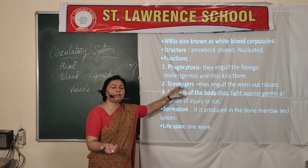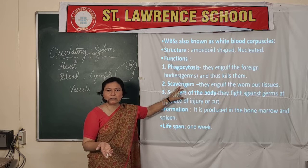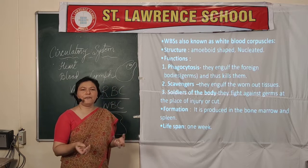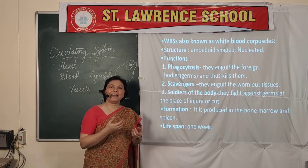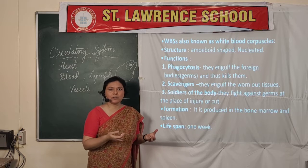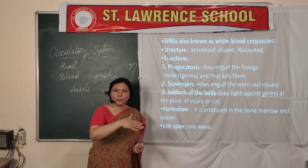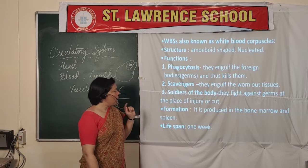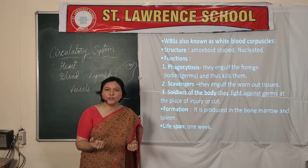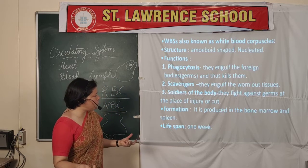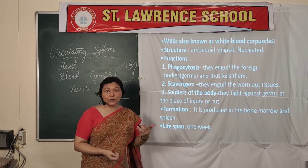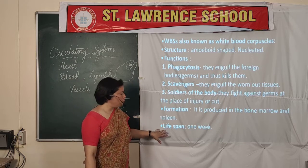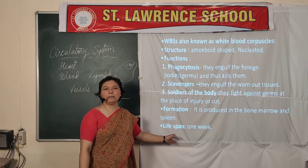The second function is scavenging — like organisms that feed on dead organisms. If any worn-out tissue or destroyed cell is present in the body, it has to be cleaned, and that is done by WBCs. Third, they act as soldiers of the body, protecting it from various germs. Suppose there is any cut or injury — there they function mainly. They are produced in the bone marrow and their lifespan is one week.